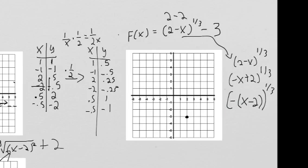It's going to be reflected horizontally because our inputs are being multiplied by a negative. With our cube root function, normally we go over 1, up 1, and over 1, down 1. But since this is getting reflected horizontally, we're actually going to go over 1, down 1, and then over 1, up 1. So there are our three critical points. Normally the cube root is concave up then concave down, but since it is reflected, it's going to be concave down first and then concave up.